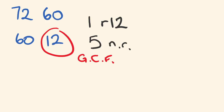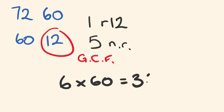12 is our greatest common factor — the biggest number that goes into both 72 and 60. Now, how do we use this to find the LCM? We divide 12 into one of the original numbers: 12 into 72 goes 6 times, then multiply by the other number: 6 times 60. The least common multiple is 360. We could also have done 60 divided by 12, which is 5, times 72, and we'd get the same answer.